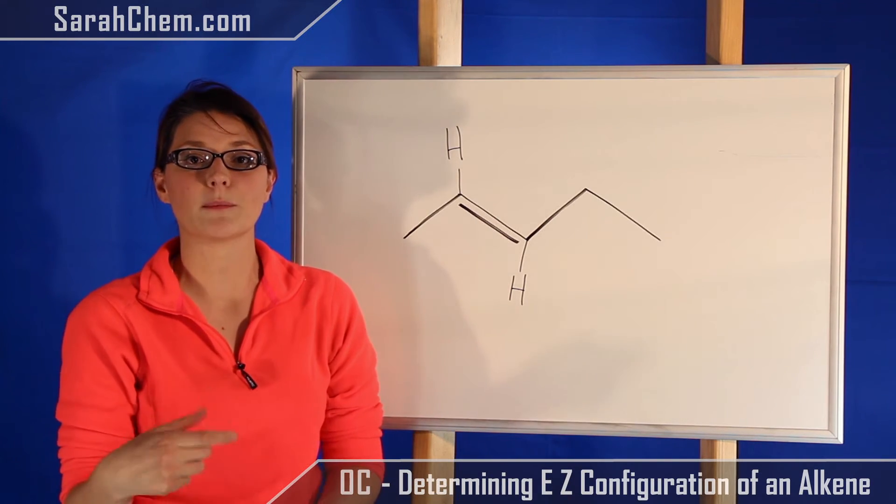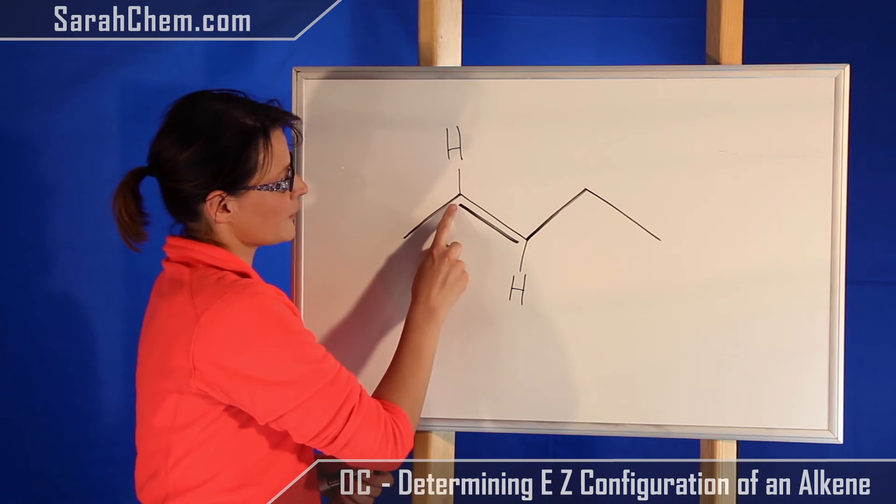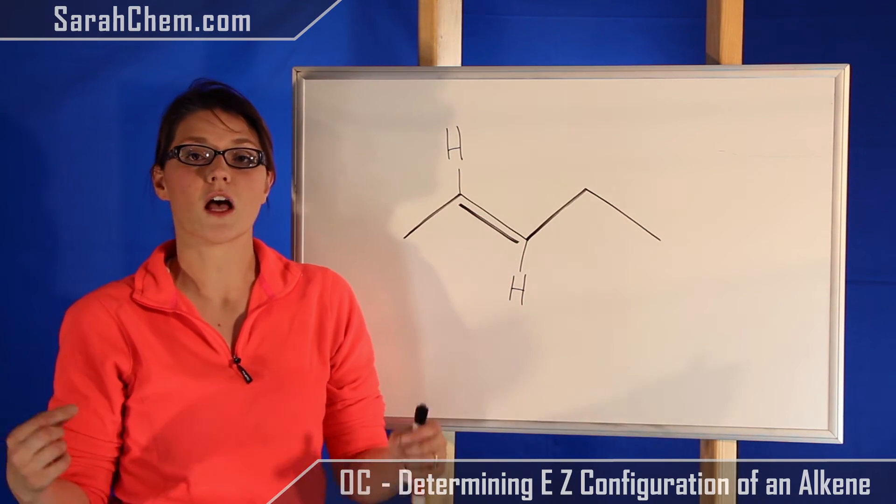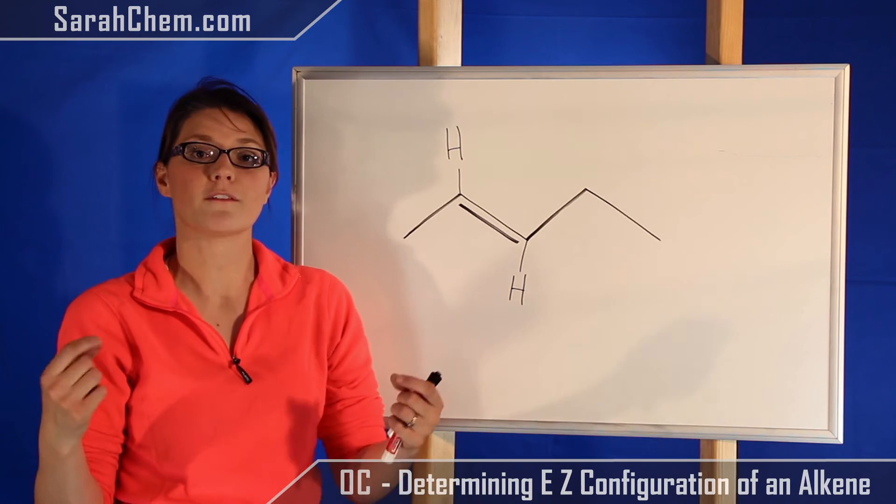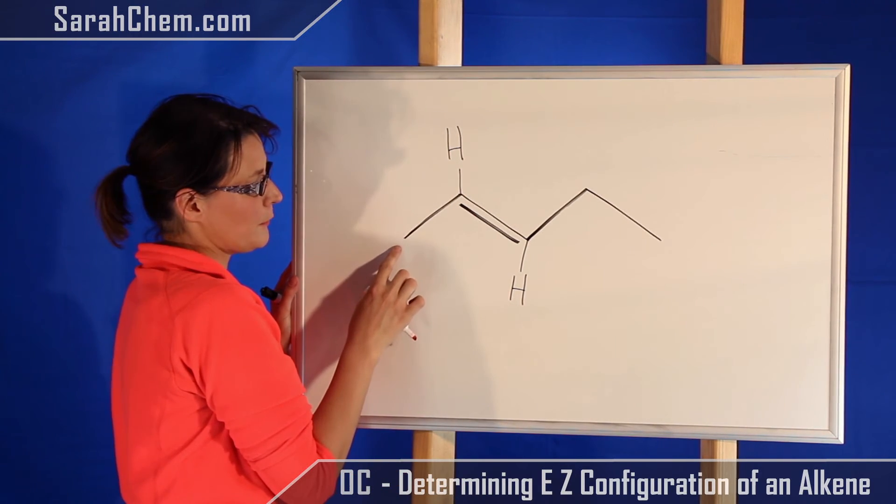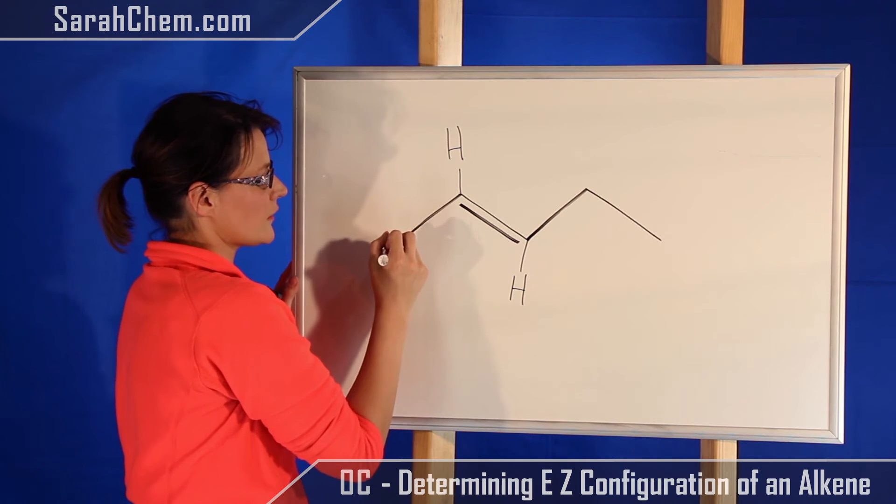So remember, when you're doing E/Z for an alkene, you're focusing on where the double bond is. We know that there's a carbon here and there's a carbon there, and we're going to assign the priorities of the attachments of that carbon first. So over here I'm comparing an H to a methyl group. The methyl would have higher priority, so this will be ranked